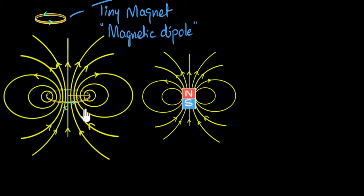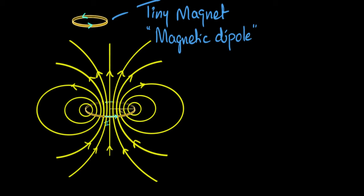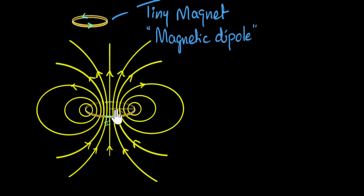This is great news because now, if you want to use magnets in any experiment, we don't need actual magnets — we can use current loops instead. The advantage of a current loop is that you can control the strength of that tiny magnet. If you make the current stronger, you get a stronger magnetic dipole; if you make the current weaker, you get a weaker magnetic dipole.